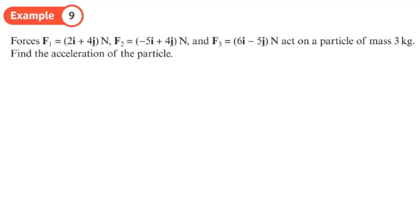Okay so we've got three forces F1, F2 and F3 act on a particle of mass 3 kg. Find the acceleration of the particle. The first thing we need to do is to find the resultant force. That's the sum of the forces so that's F1 plus F2 plus F3.